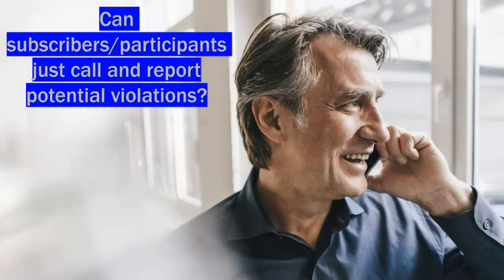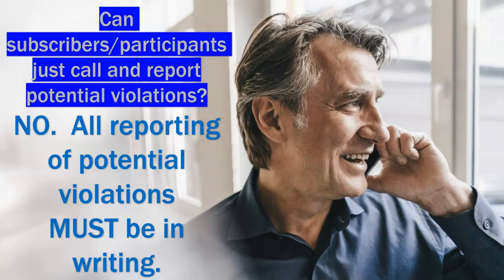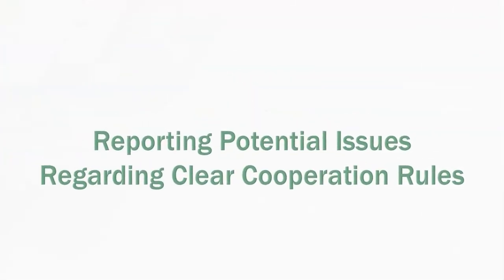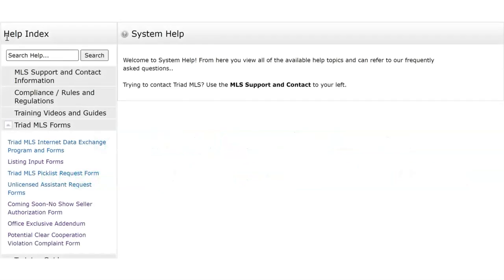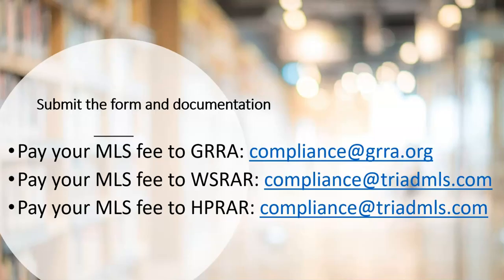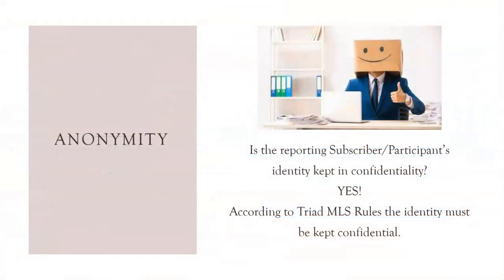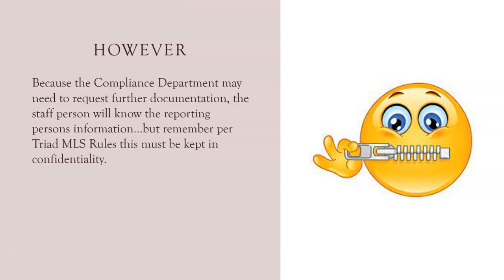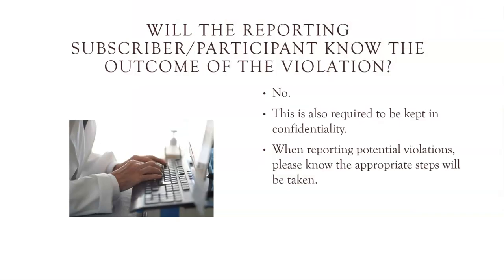Do not call Triad MLS or local associations to report issues — all reporting must be in writing. If the property is in the system, use Report It. Clear Cooperation potential violations can be reported by using the potential clear cooperation violation complaint form, also found in Matrix Help under the Triad MLS forms section. Email any potential rule violations to the appropriate compliance department. Agents who report potential rule violations will have their identity kept very confidential — only compliance staff and possibly association staff will know, as further information may be needed. Likewise, the outcome of any reported issues is also kept confidential.